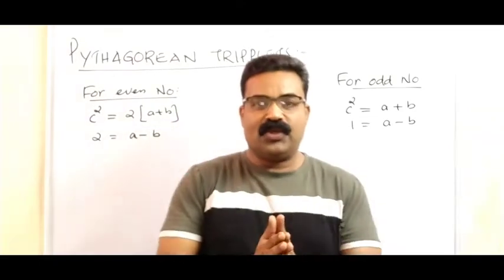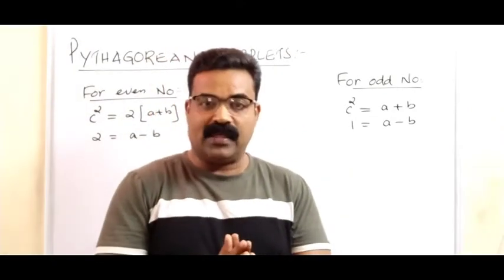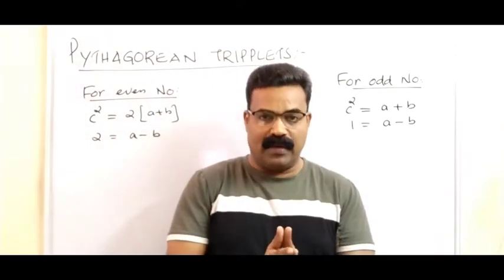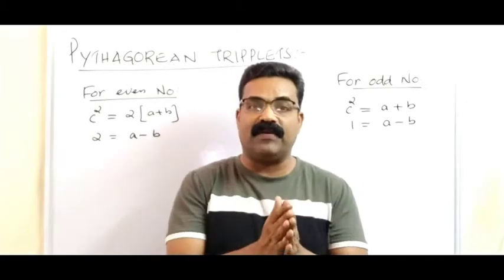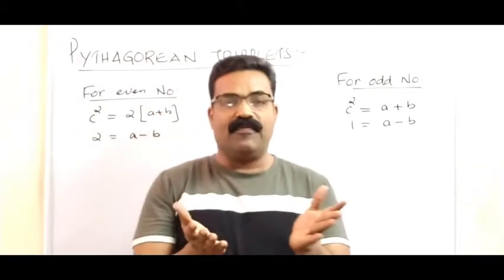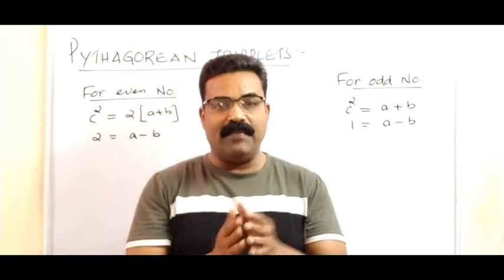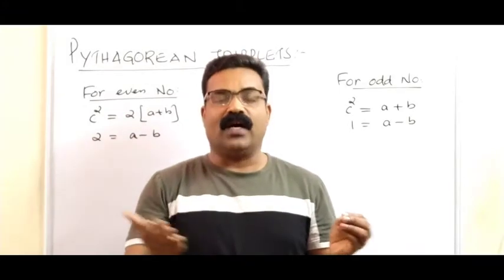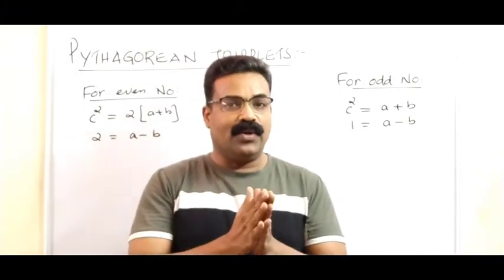Welcome back. Today we are going to see Pythagorean triplets — how to find them. Pythagorean triplets are numbers which satisfy Pythagoras theorem. The three numbers, if put as the sides of a right-angled triangle, give us: hypotenuse squared is equal to the sum of the squares of the other two sides.